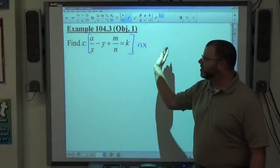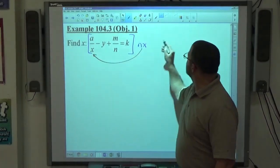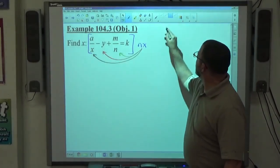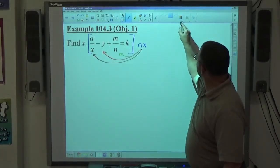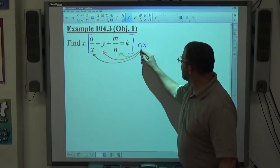Once again, I've got to multiply NX times every piece. This time there's four pieces, so I'm going to do NX times A over X, NX times negative Y, NX times M over N, and NX times K.